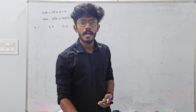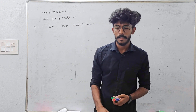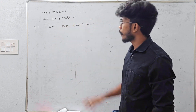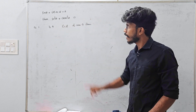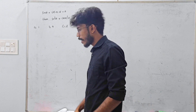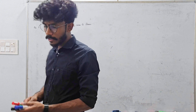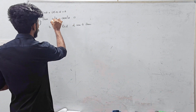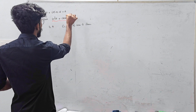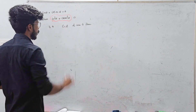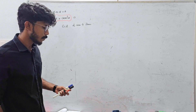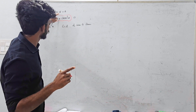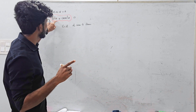Let me check again. Then finish the question. Sin theta plus cosec theta — sin squared theta plus cosec squared theta. Sin theta plus cosine theta.